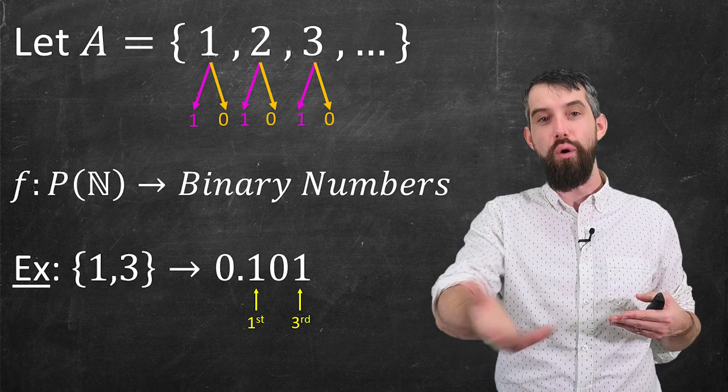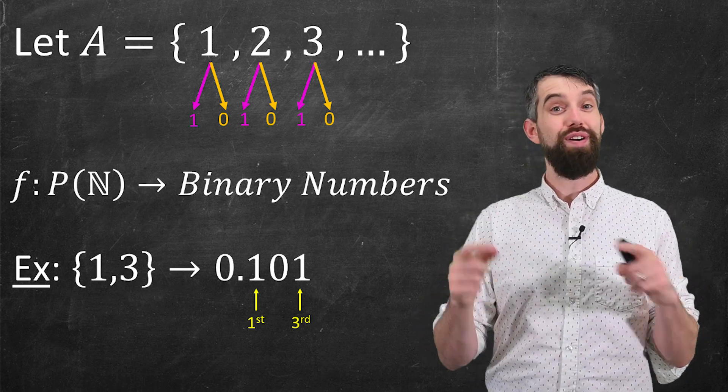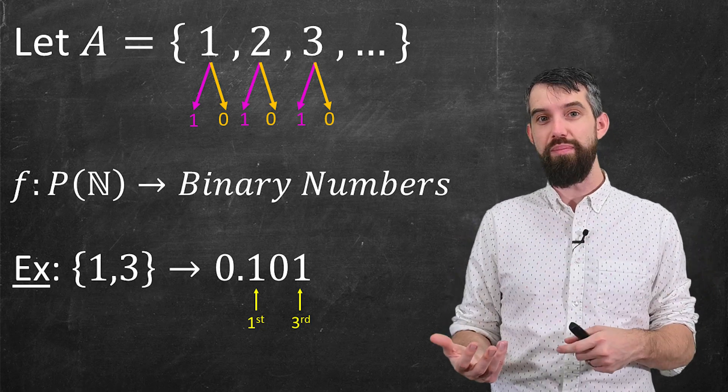Zero in the second spot, the fourth, the fifth, the sixth, and all the way out. So I'll just write it as 0.101. So via this process, I'm taking these subsets of the natural numbers and spinning out binary numbers.